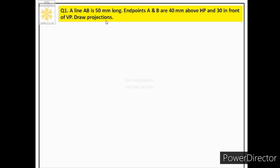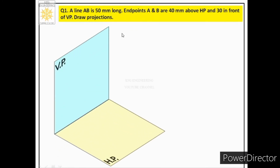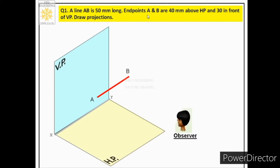We are asked to draw the front view and top view of the line. Whenever we solve any case of a line, we first have to identify the quadrant. The words 'above HP' and 'in front of VP' indicate the first quadrant. The first quadrant is shown in a pictorial view with the vertical plane, horizontal plane, and reference line XY.